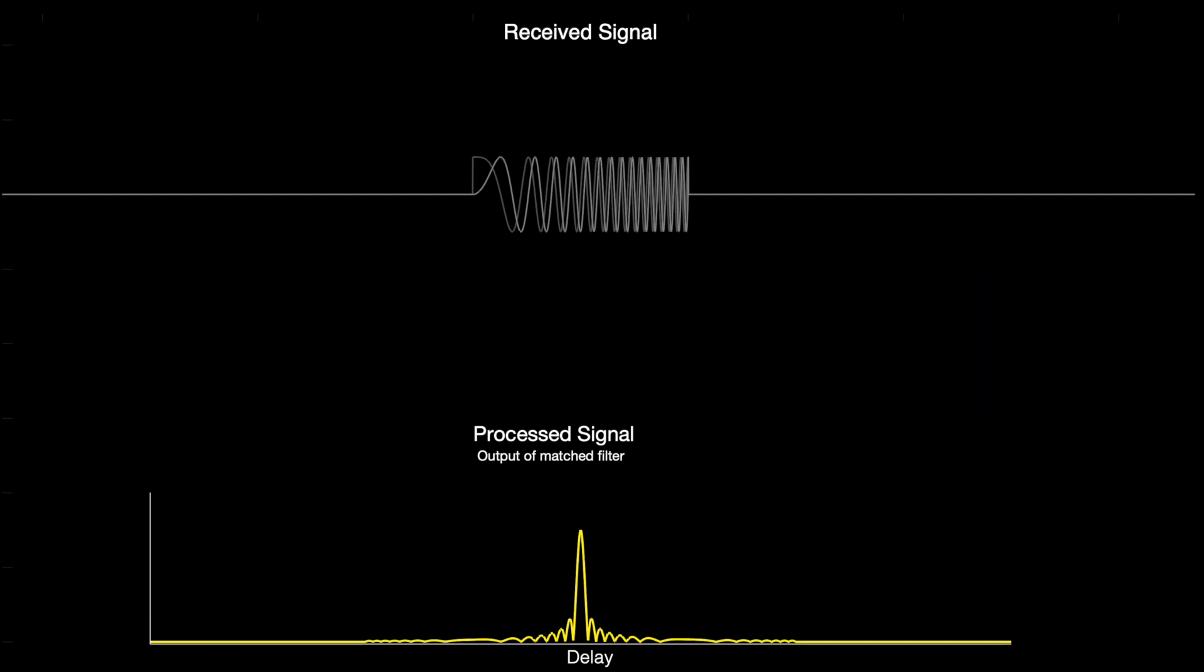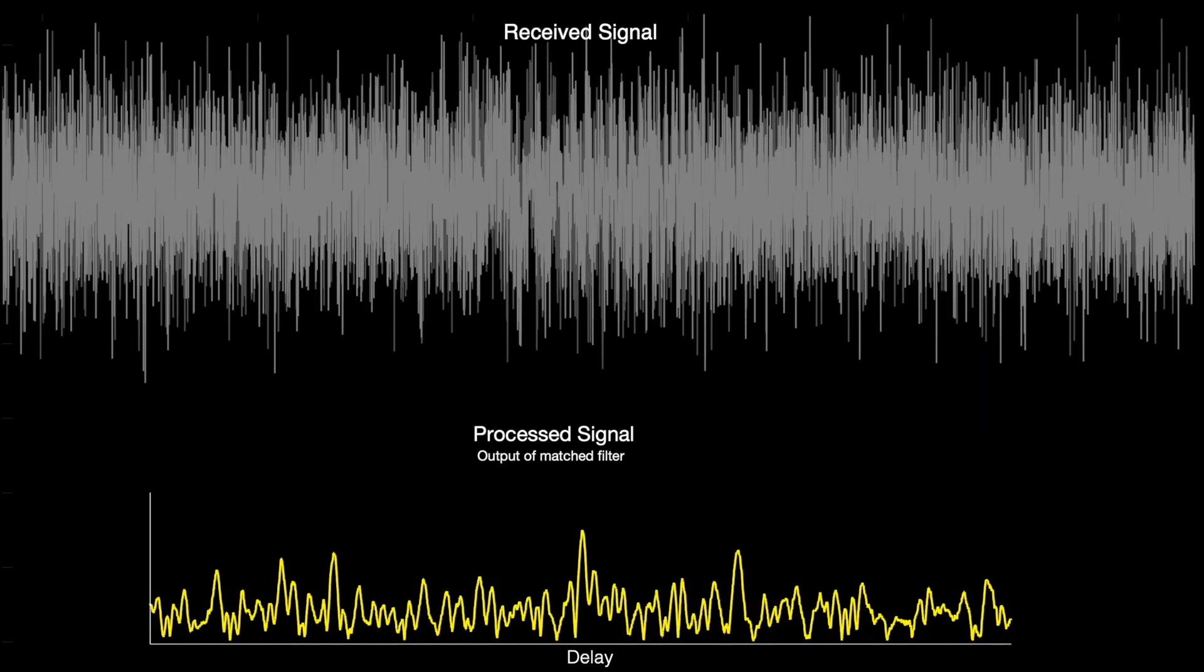Now if I add the same level of noise to this signal as we did to the rectangular pulse example, we can see how much more obvious the peak is. There is still a single peak that rises above the rest of the noise. In this way, an LFM waveform is less susceptible to noise than a similarly powered rectangular pulse.